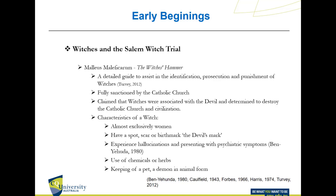Moving on to around the 1600s, we see an interesting period with witches and the Salem Witch Trials. The Malleus Maleficarum was published by Heinrich Kramer and Jacob Sprenger, two Dominican monks heavily associated with the Catholic Church. Published in 1487 and originally in Latin, later translated into English in 1928, it was essentially a guide to witch hunting — a detailed guide to the identification, prosecution, and punishment of witches, fully sanctioned by the Catholic Church.